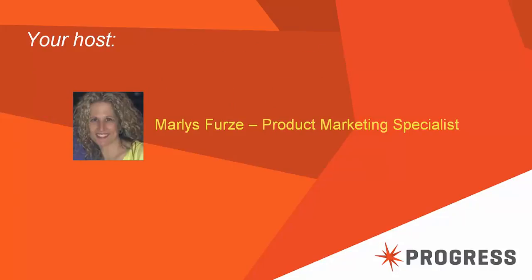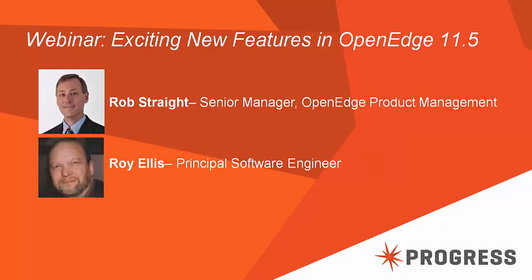Rob Strait is Senior Manager, OpenEdge Product Management at Progress Software Corporation. He is responsible for requirements gathering from the OpenEdge user community and for defining releases to satisfy those requirements, primarily in the areas of development, application servers, mobile, and business process management. Rob has been with the OpenEdge Business Unit since 2005, with 25 years of development experience initially as a software engineer and later as a product manager.